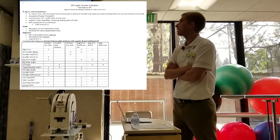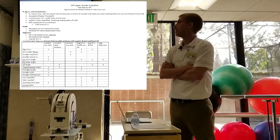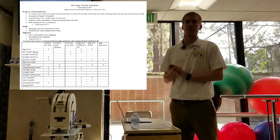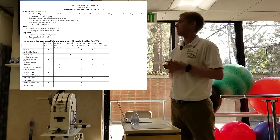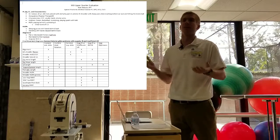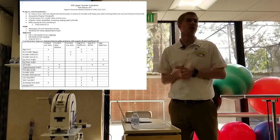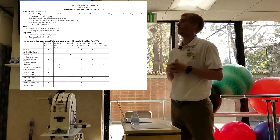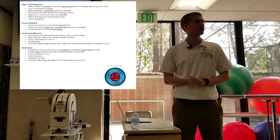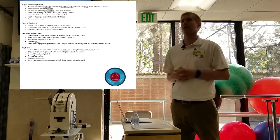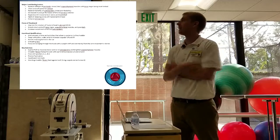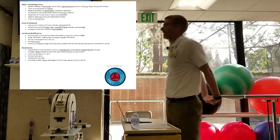For an outcome measure, we did the PSFS, and he was a 5 for playing tennis and a 6 for swimming. In case you aren't familiar, a 0 on the PSFS is unable to perform the activity, and a 10 is able to perform the activity without any difficulty. So he's about right in the middle for both of those activities.